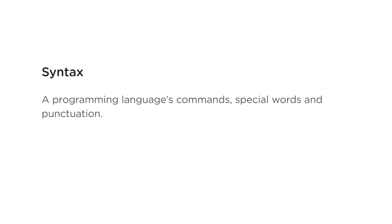Before you get started programming, I want to talk about what I'll cover in this course. JavaScript is a programming language, and like any language, it has its own vocabulary and grammar. Programmers call this syntax. A programming language's syntax is the rules of the language, or the instructions, special words, and punctuation you use to put together a program. Every programming language has its own syntax, just as English, Spanish, and Mandarin each have their own vocabulary and grammar.